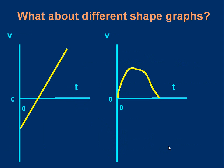This works just as well if we don't have flat lines — we could have straight velocity-time graphs or even curved ones, and the area still tells us the displacement. On a graph with two sections, the blue triangle represents a negative displacement and the red area represents a positive displacement. We can add them to get the total displacement. Even with a complicated curve shape, the area tells us the displacement.